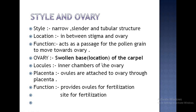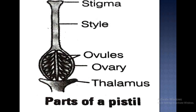The ovary is the swollen base of the carpel. Its location is the base of the structure — it is the oval-shaped swollen structure. Locules are the inner chambers of the ovary. Placenta is the structure through which the ovules are attached to the ovary wall. The function of the ovary is to provide ovules for the process of fertilization, and it is also the site for fertilization. Ovules are the female reproductive units.